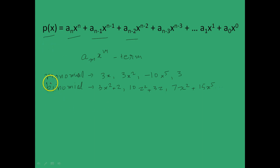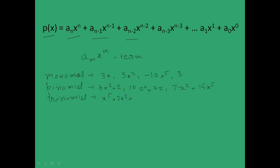And if the polynomial contains three terms then it is called a trinomial. Examples include x to the power 5 plus 2x squared plus 1, or x cubed plus x squared plus 10, etc.